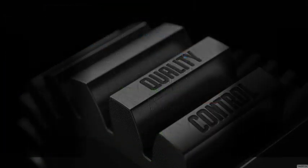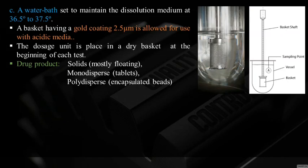Agitation speed is 50 to 100 rpm. The water bath maintains the dissolution medium at 36.5 to 37.5°C. A basket with a gold coating of 2.5 micrometers is allowed for use in acidic medium, since acidic medium may corrode the basket. The dosage unit is placed in the dry basket at the beginning of each test.